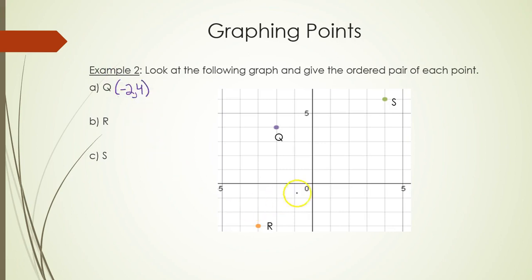Point R, we have left 3, so negative 3. And down 3, so also negative 3.